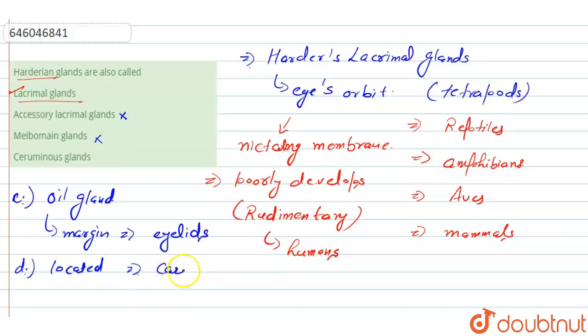...cartilaginous portion of the external auditory canal of an organism. So here the right answer for our question is option number...